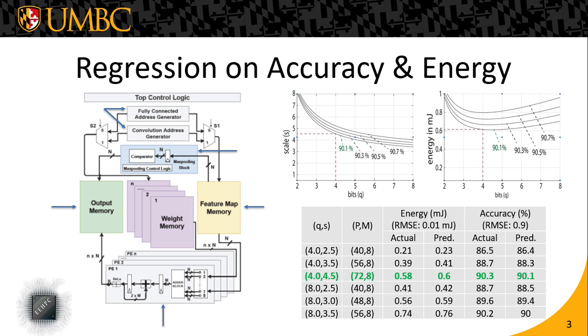This table demonstrates the differences between the actual and the predicted values due to regression for both energy and accuracy. As you can see, the accuracy RMSE is actually 0.9, which is indicative of a very good fit in our use case.